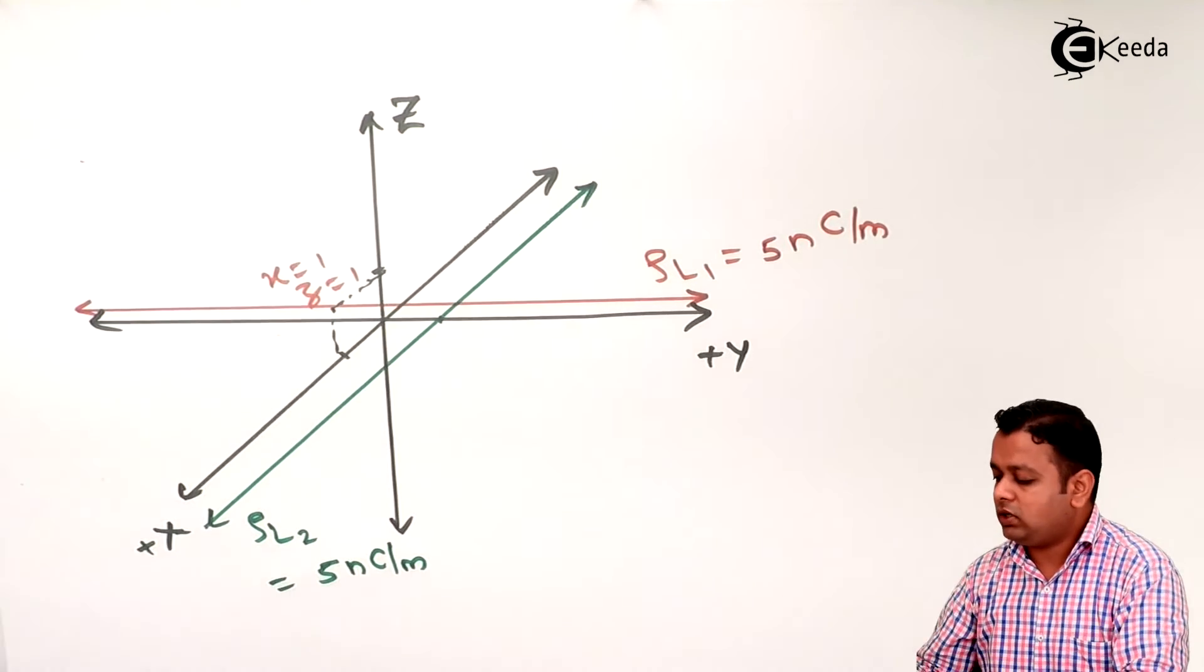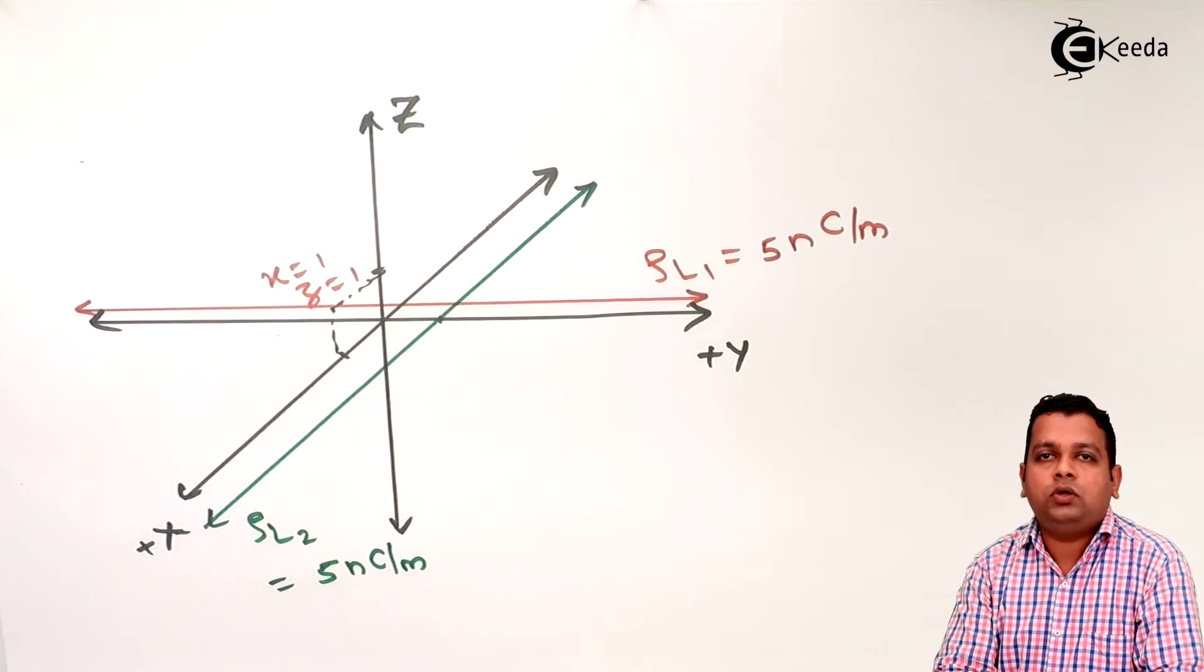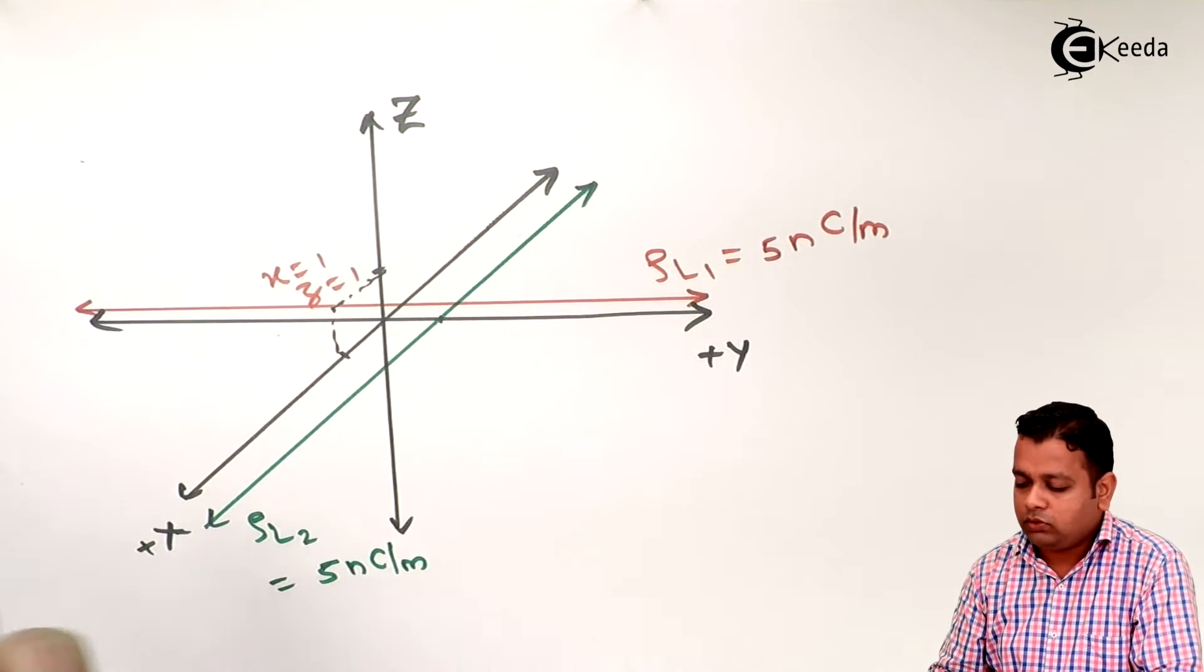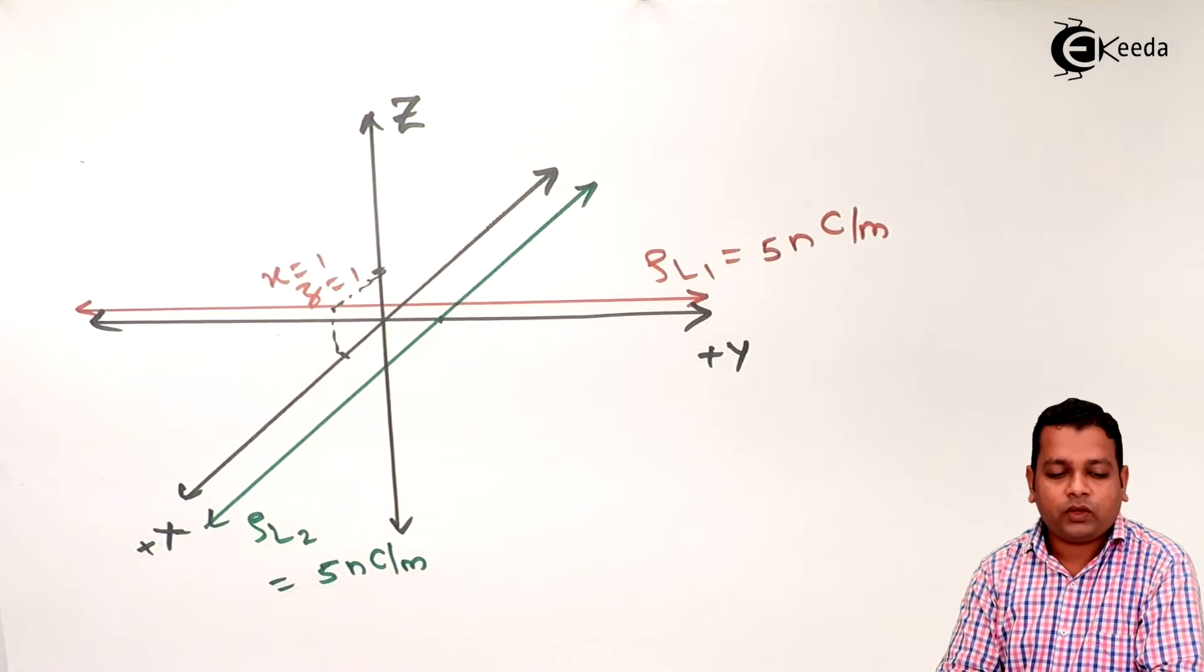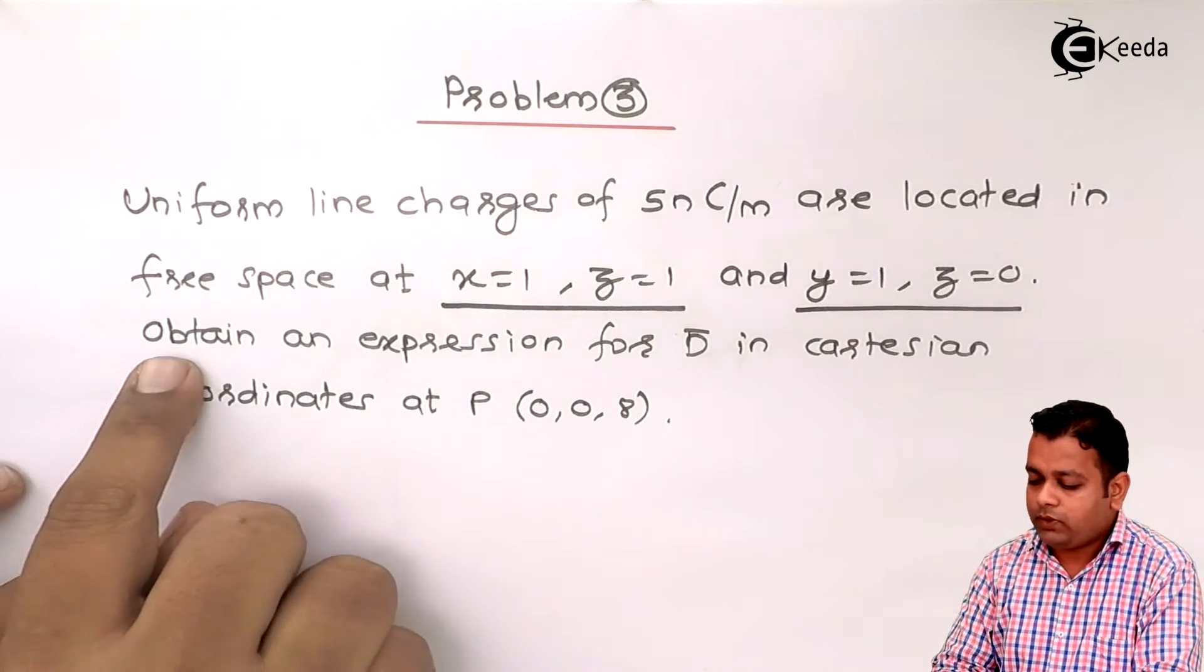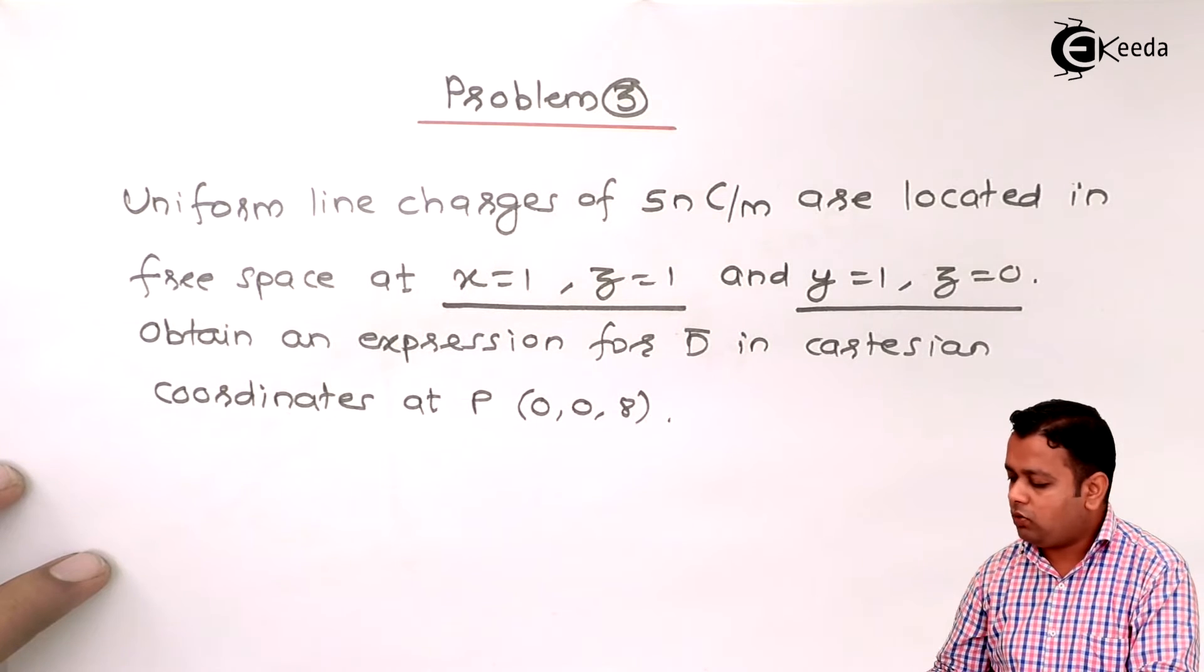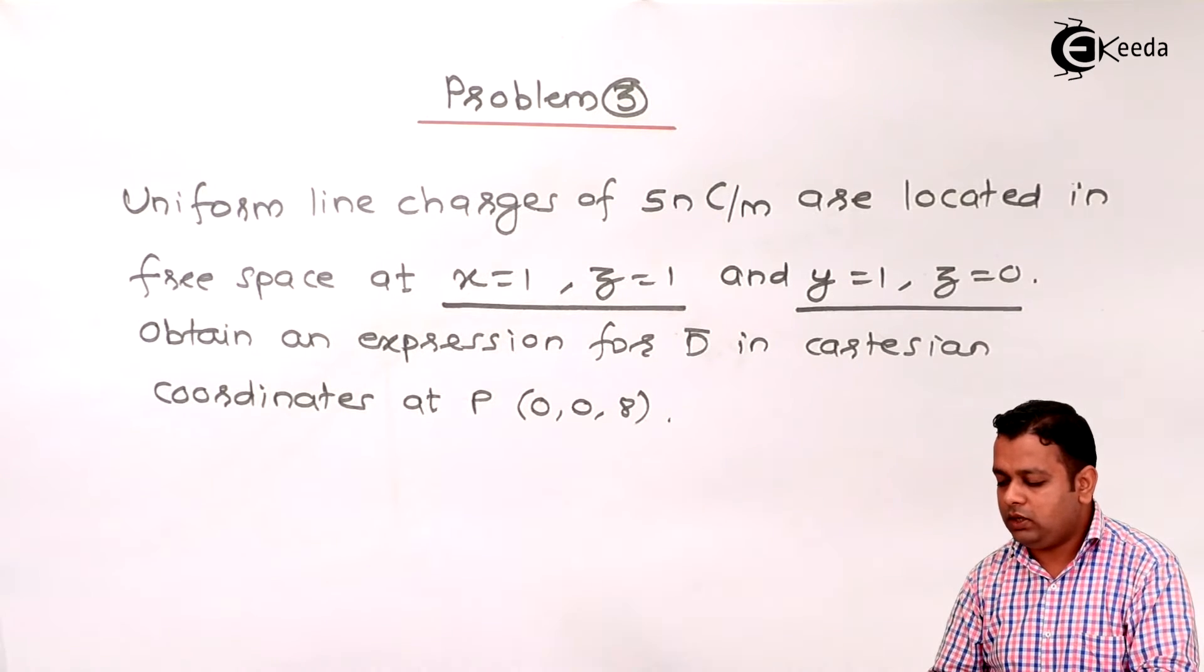So now the scenario is clear to us. As per the problem statement, we have two electric fields because of the two electric charges.